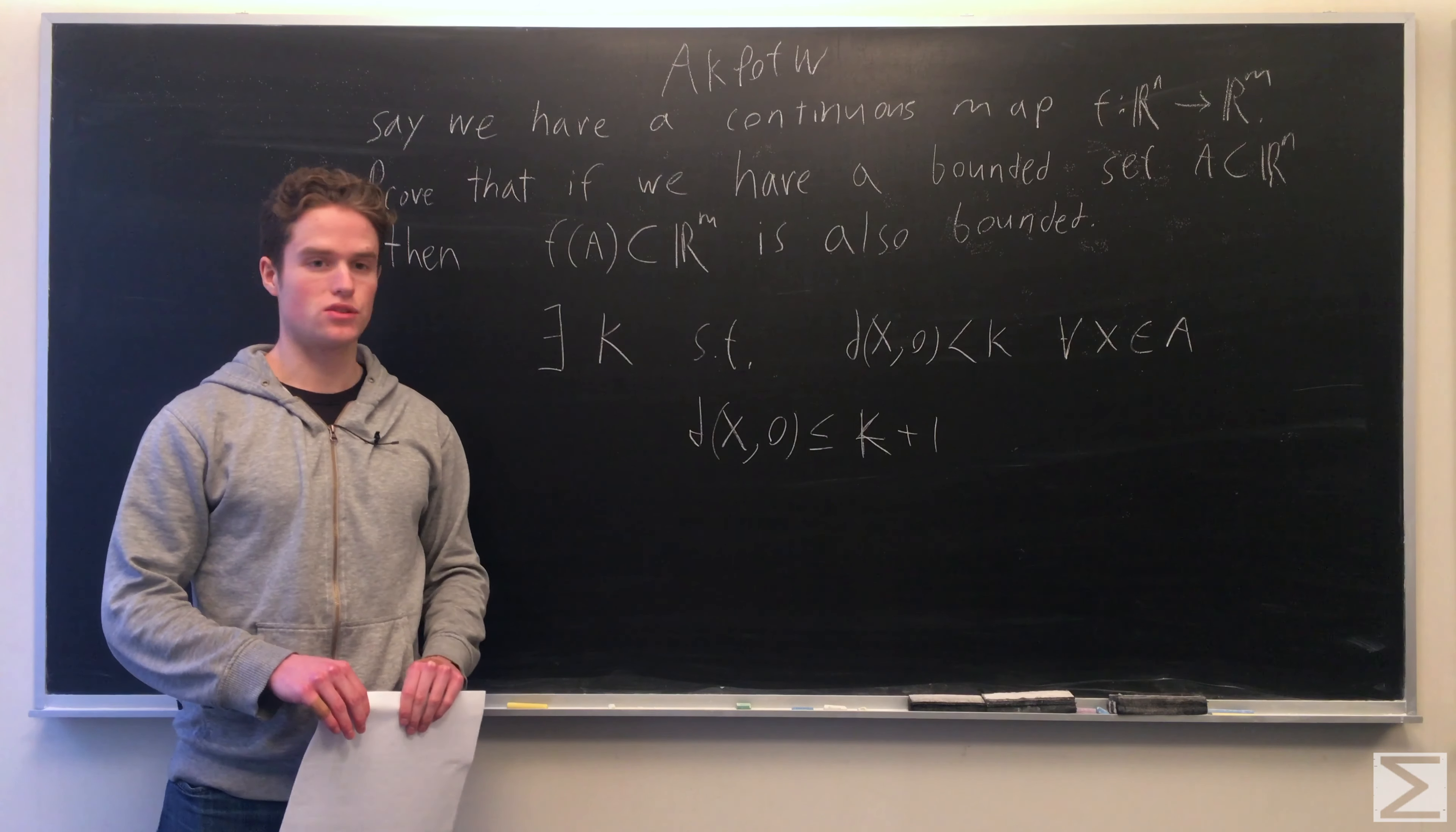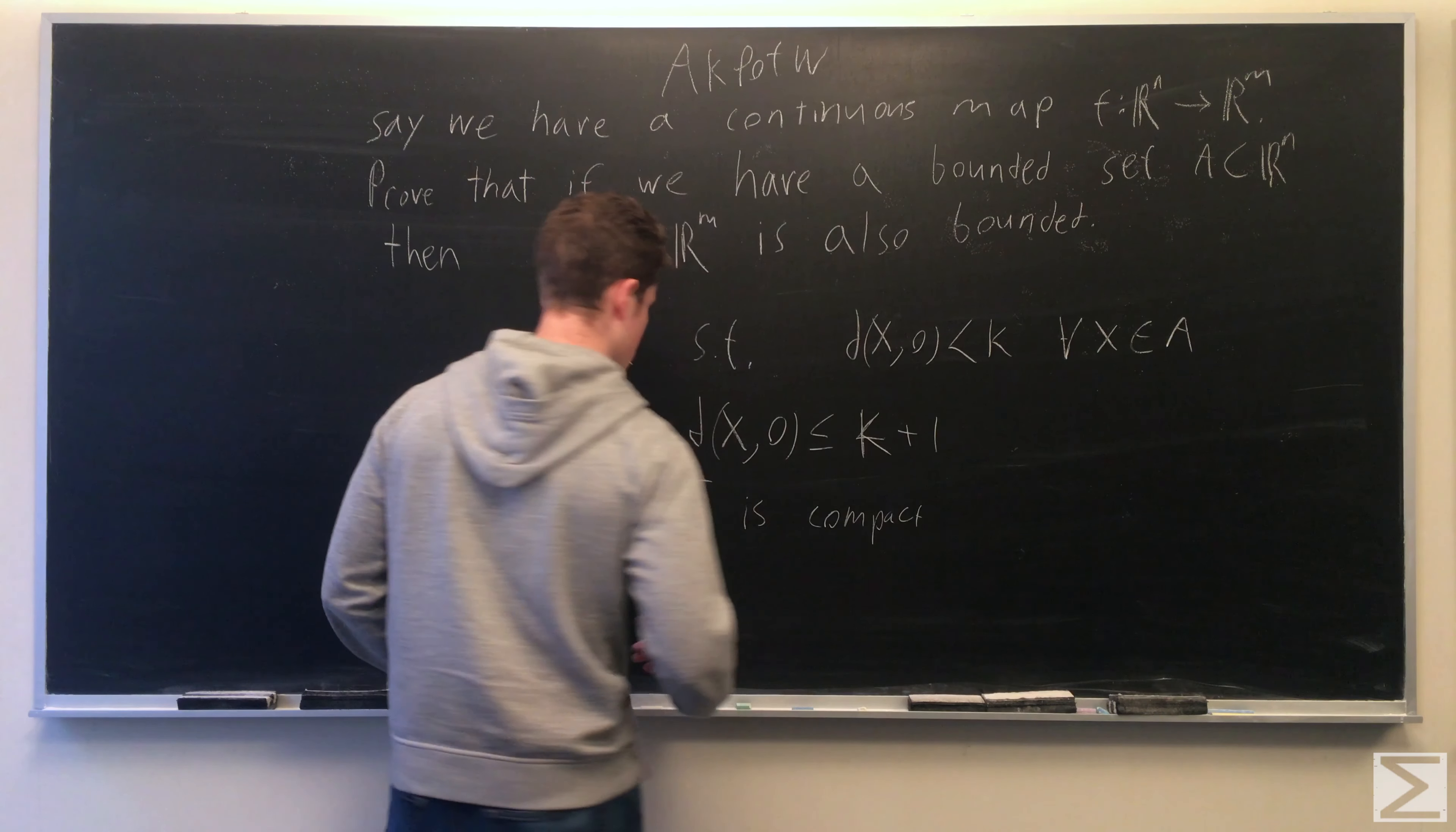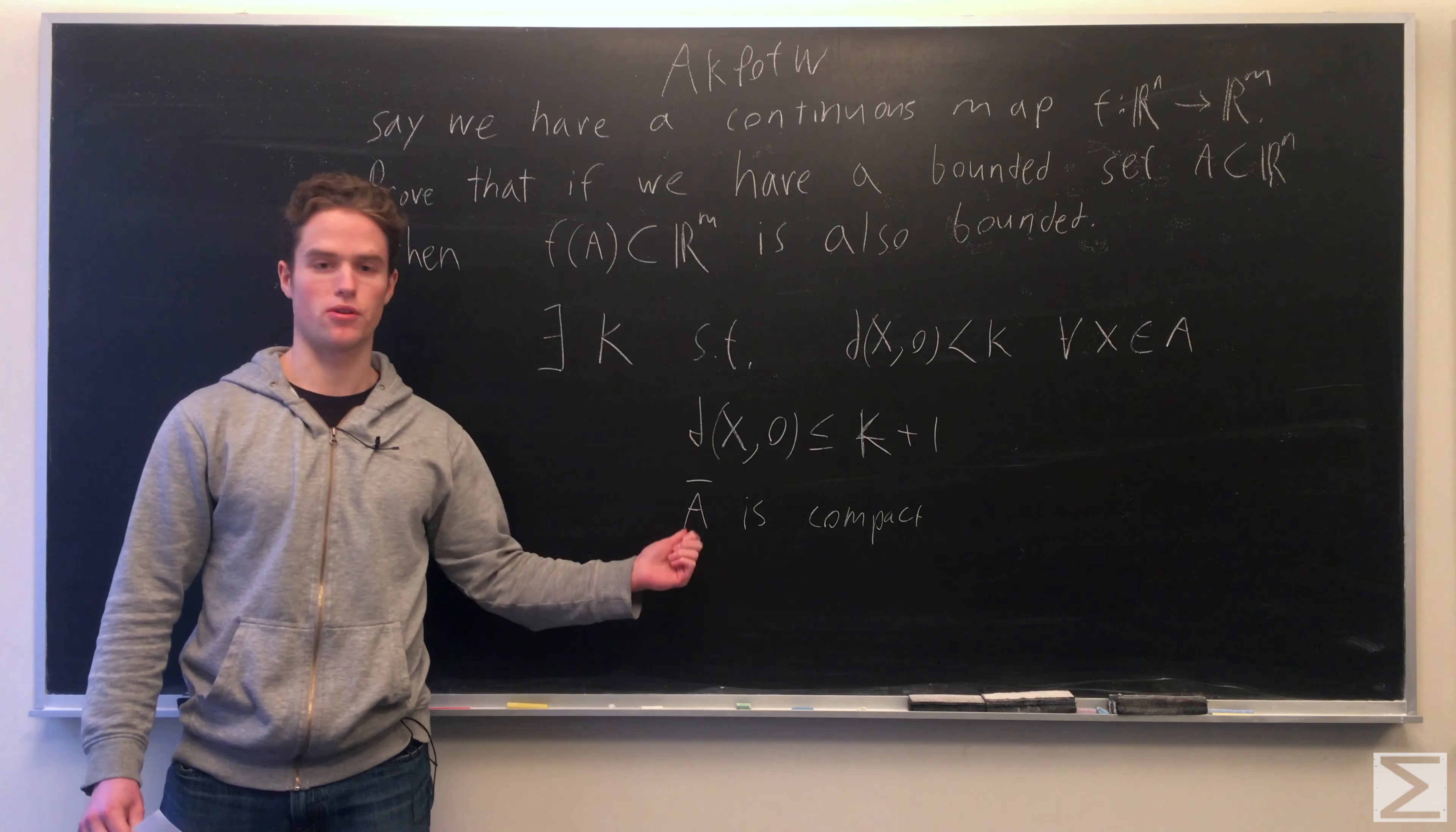This is useful because now we have a closed bounded set, the closure of A. By a common result in topology, a set in R^n is compact if and only if it is closed and bounded. A-bar is closed and bounded, so A-bar is compact.